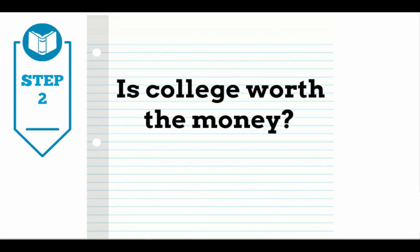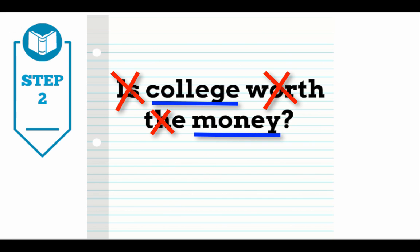Step 2. Identify the major concepts of your topic. Begin by crossing out all secondary words. This leaves us with our major concepts: college and money.